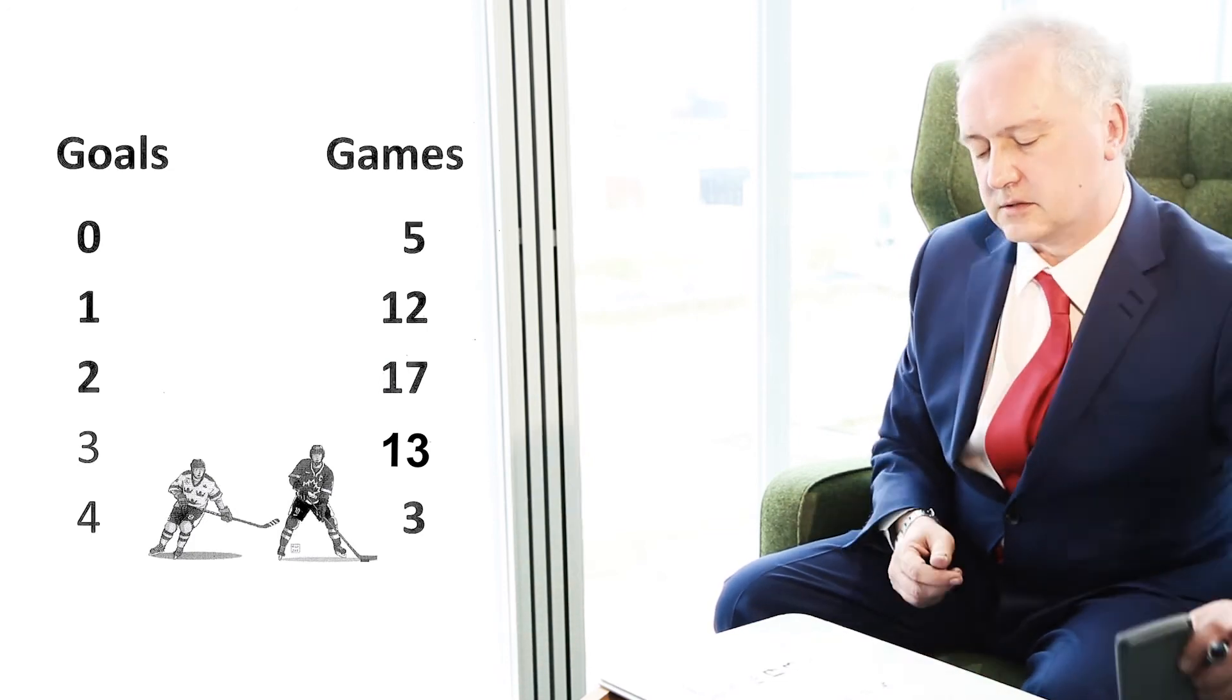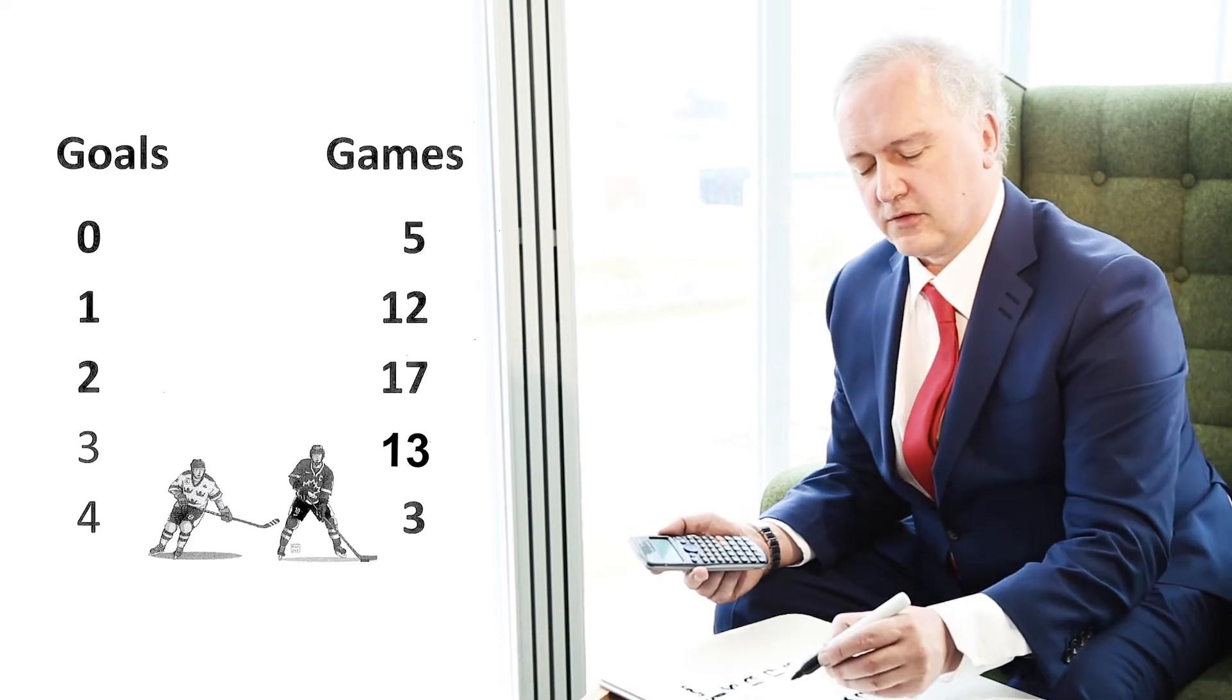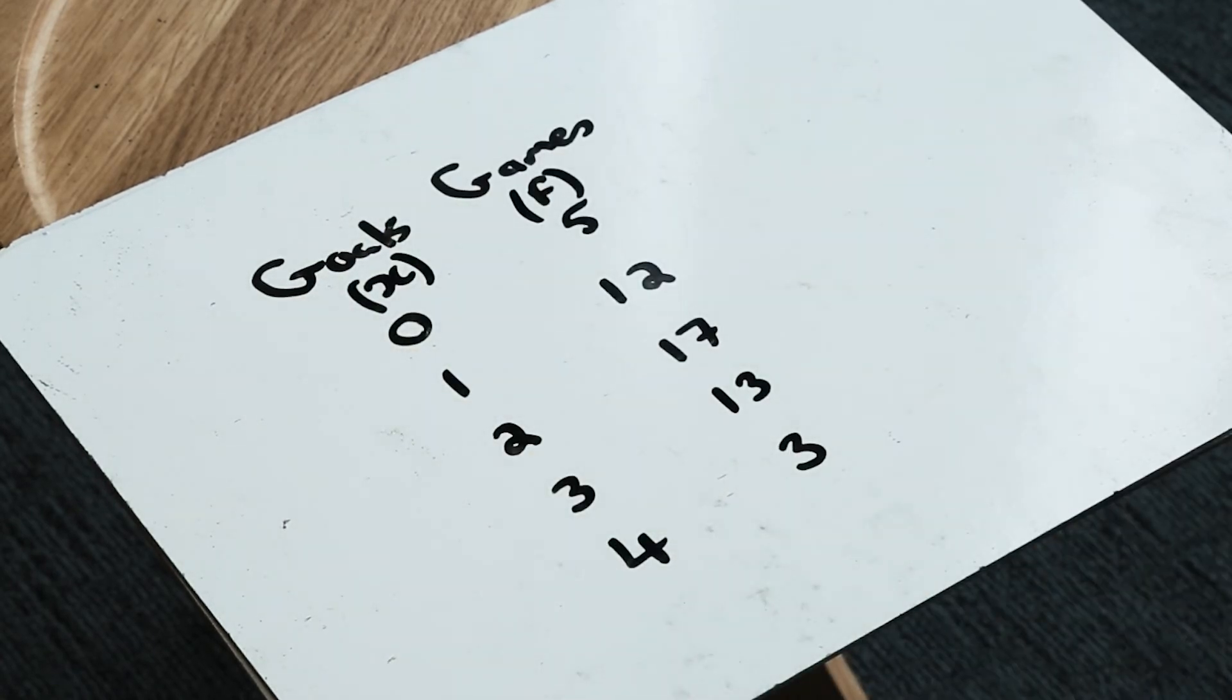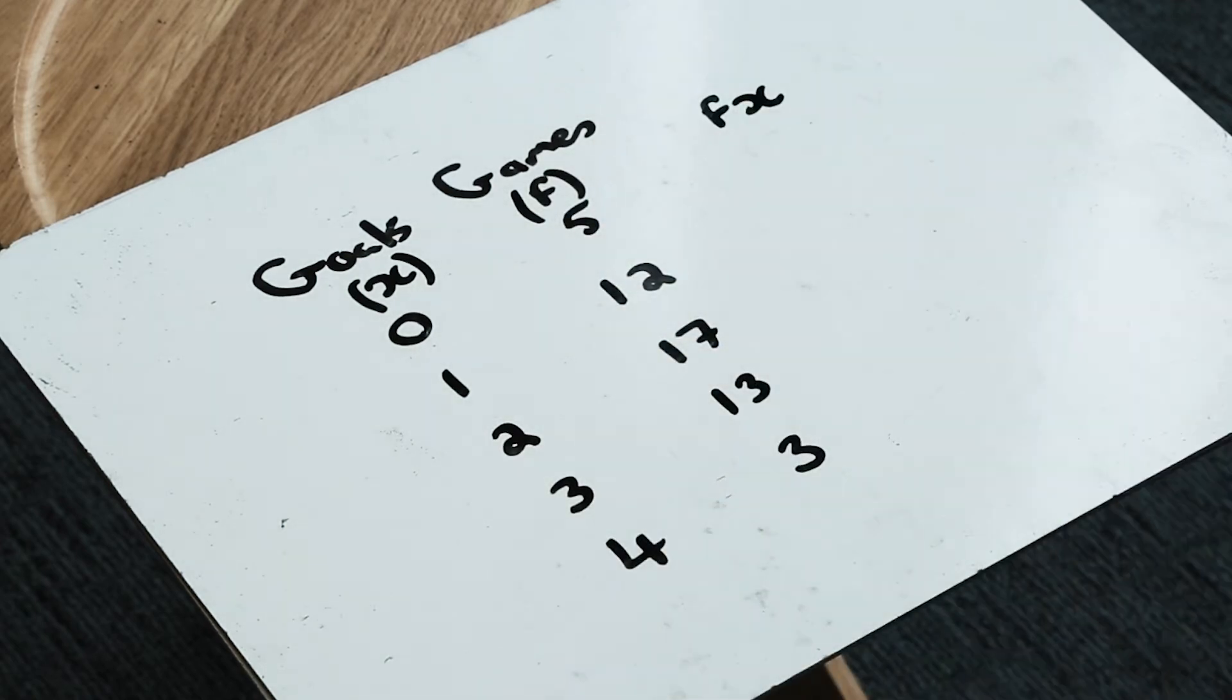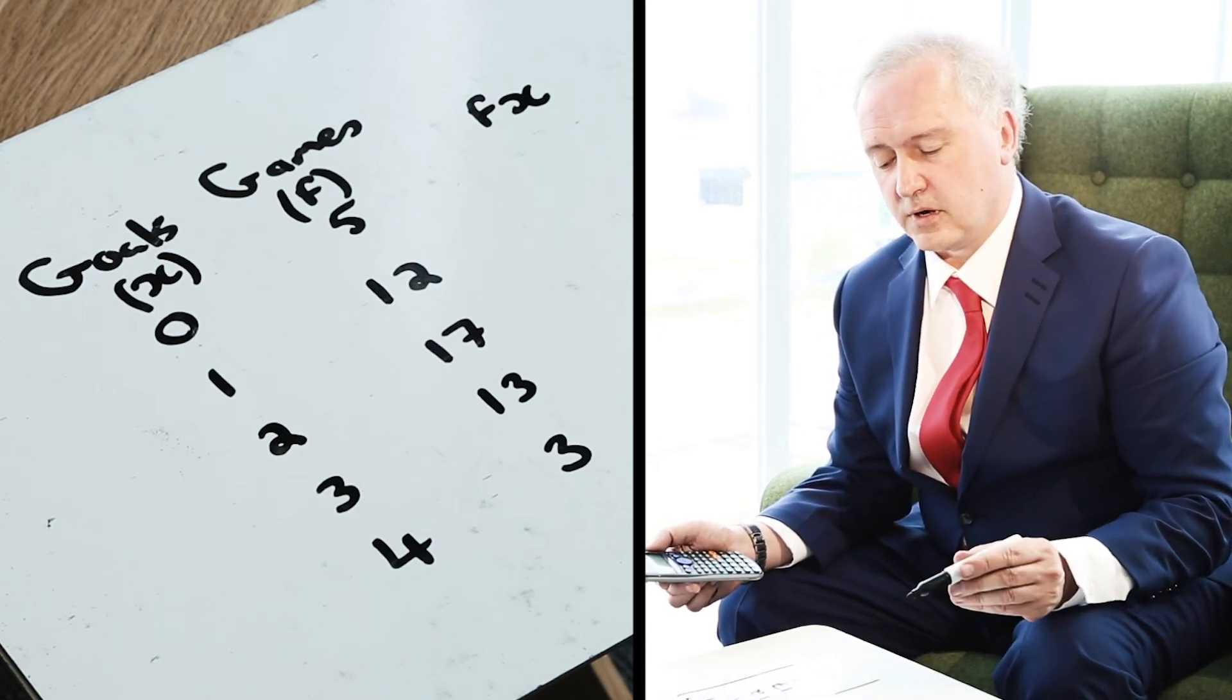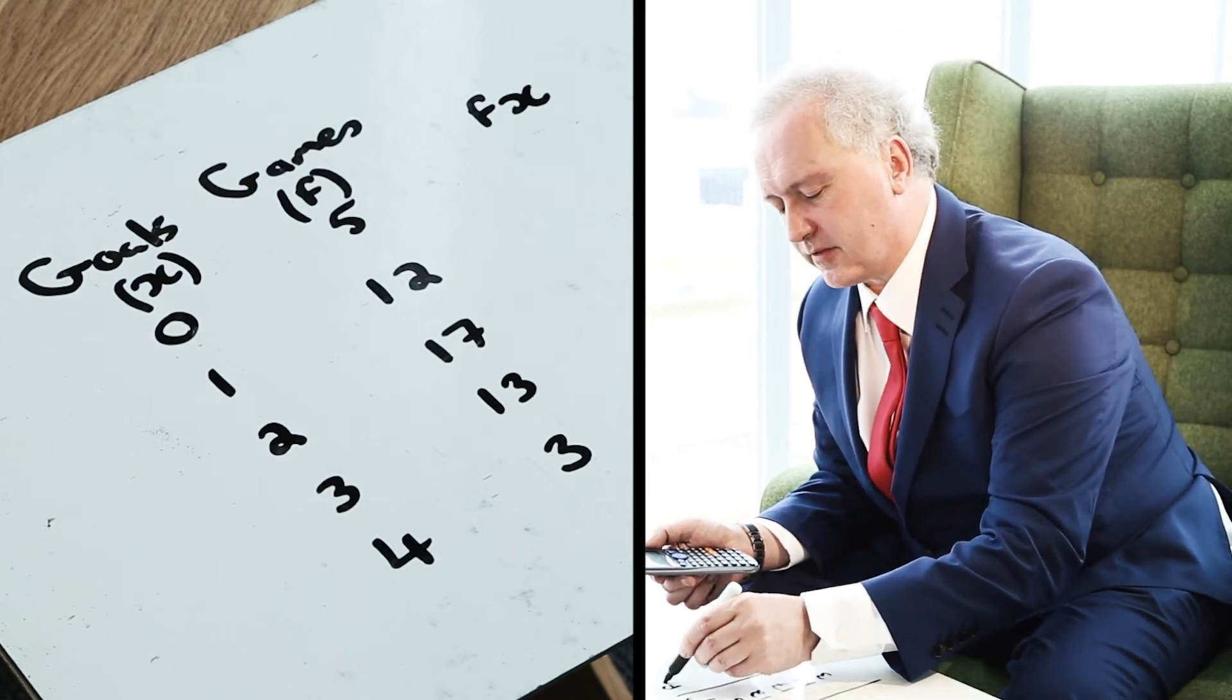Now to work out a mean for frequency data, if we work systematically, it's very straightforward. If I call the number of goals x and I call the number of games the frequency, just call it f, all I need to do to work out the mean for frequency data is to add an extra line of work, an extra column. What I'm going to do here is multiply the number of goals by the number of games in each case, so I'm going to call this my fx column.